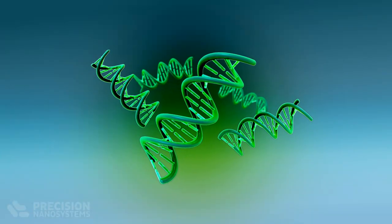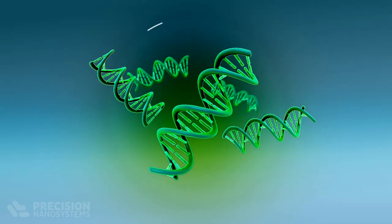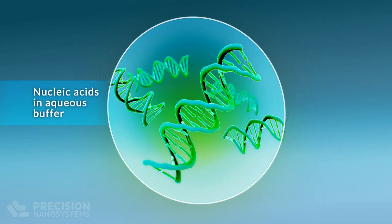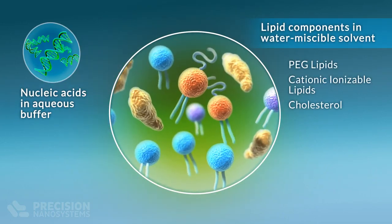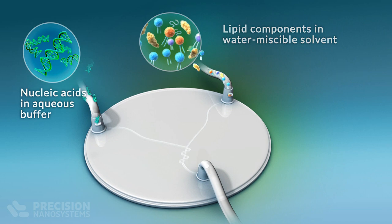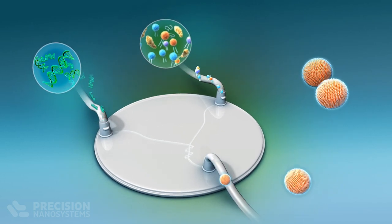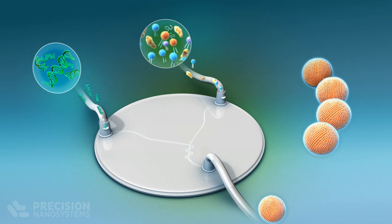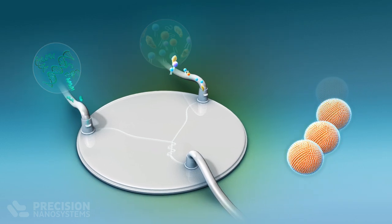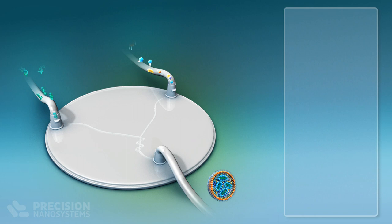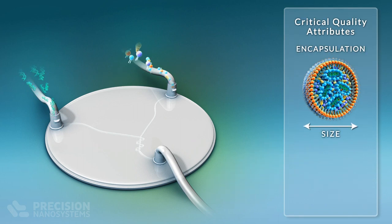RNA is formulated into lipid nanoparticles by mixing RNA in buffer with lipids in ethanol to initiate self-assembly. Self-assembly requires the coordination of millions of molecules and requires a well-controlled environment that promotes rapid and consistent mixing. This is crucial to ensuring particles meet critical quality attributes that dictate the safety and efficacy of the drug product.